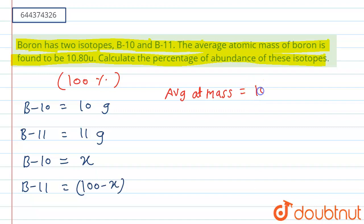And the molecular mass of second isotope which is 11, and it is multiplied by its abundance that is 100 minus x, and divided by total abundance that is x plus 100 minus x. So in this question we are given with the average atomic mass which is equals to 10.80.